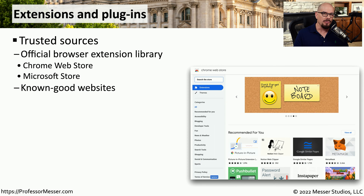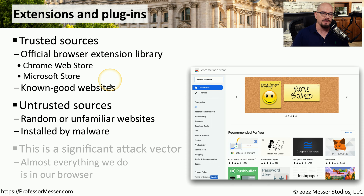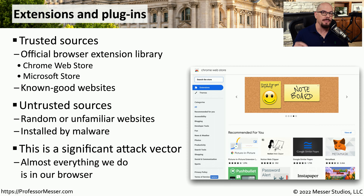When installing a new program or browser extension, make sure you're installing it from a trusted website — this might be the Chrome Web Store, the Microsoft Store, or another site you genuinely trust. You don't want to install software from a third-party website or from links that appeared in your email. Any software you install could potentially have malware inside, so installing from known good websites is always the best choice. Attackers know we commonly customize browsers with extensions, so their malware is ready whenever you download from an untrusted site.